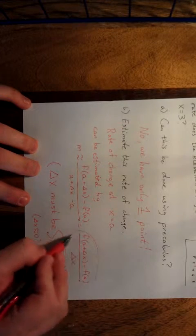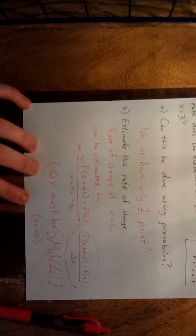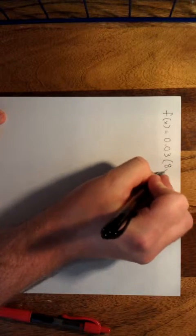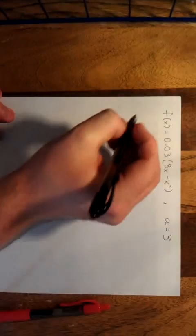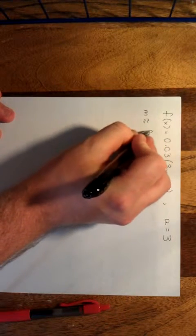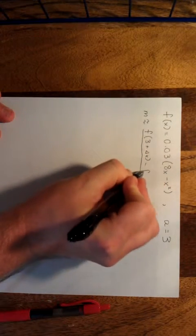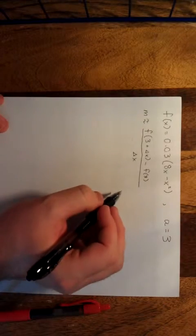We need to find this expression for our specific function and value of a. So: f(x) = 0.03(8x − x²), and a = 3. The rate of change is approximately equal to [f(3 + Δx) − f(3)] / Δx, with the promise that delta x must be a really small value.